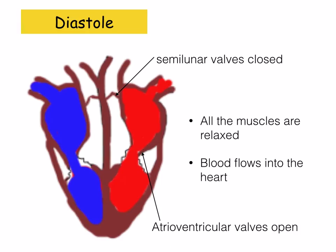Looking at what actually happens — the first stage is diastole. The muscles of the heart are relaxed, and blood flows into the heart. Notice how the atrioventricular valves, which we also call the bicuspid and tricuspid valves, are open. The semilunar valves up in the arteries are closed, preventing blood from flowing back into the ventricles. The muscles in the heart are relaxed.